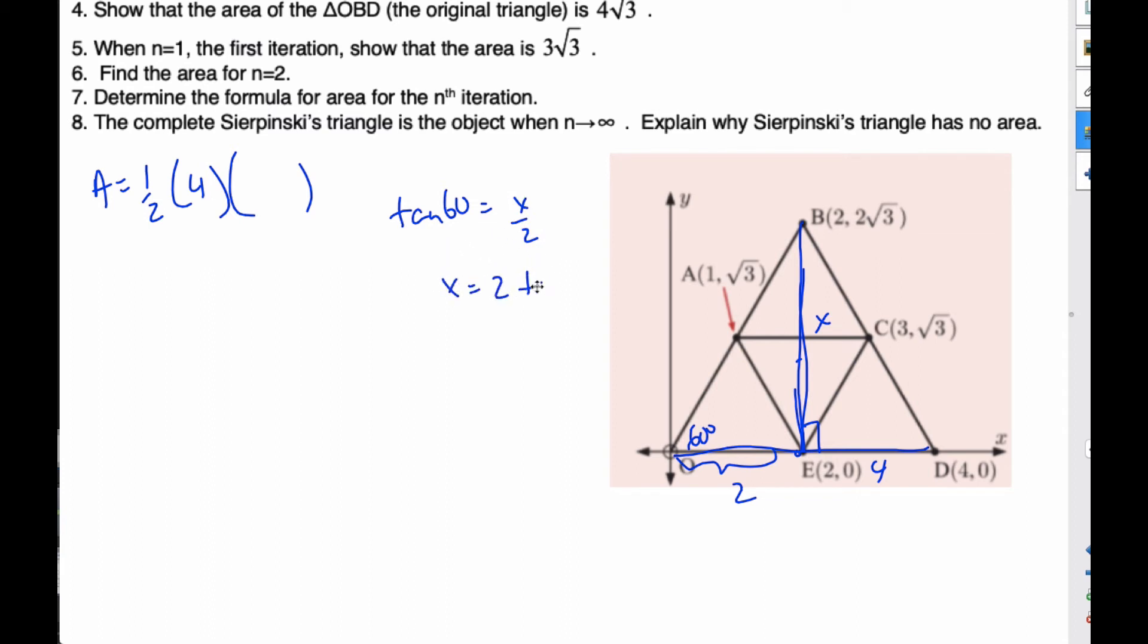If I do this arithmetic, I get 2 tan 60. I know tan 60 off the top of my head is √3. So this is 2√3, and so my area is 4√3. There is the original area.